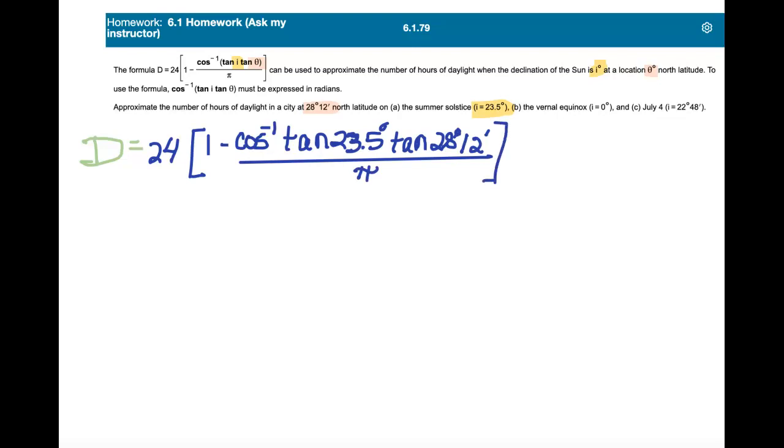Okay, so this is the equation we have to work with. Now, if I take care of just this part up here in the problem, because this is the part that we're really concerned about, this inverse cosine, the tangent of I times the tangent of theta. So taking care of just that,